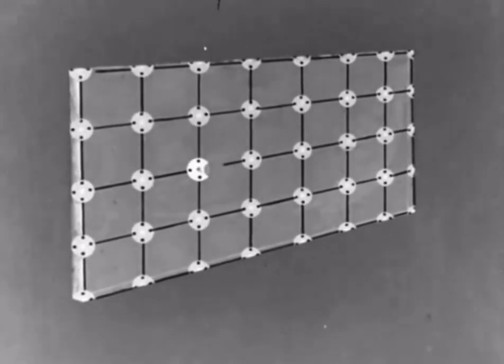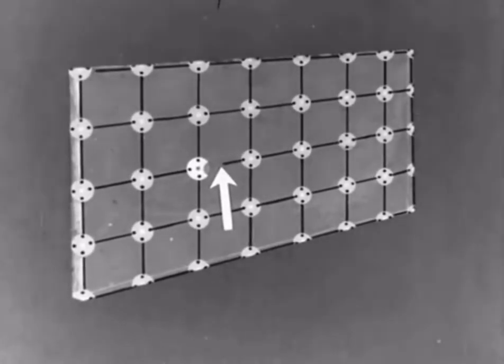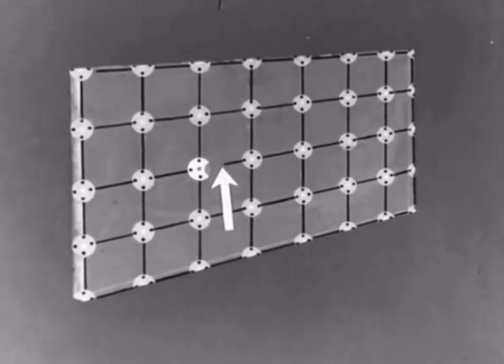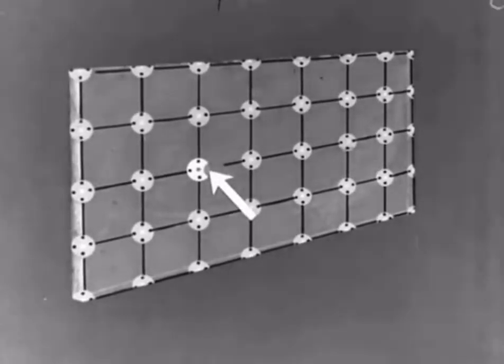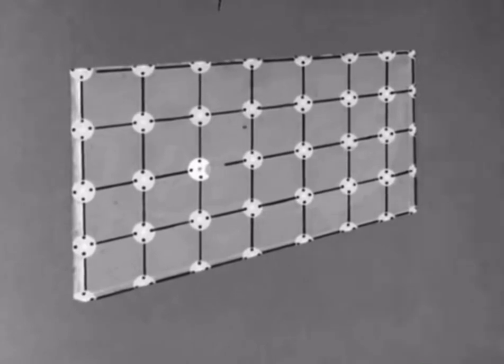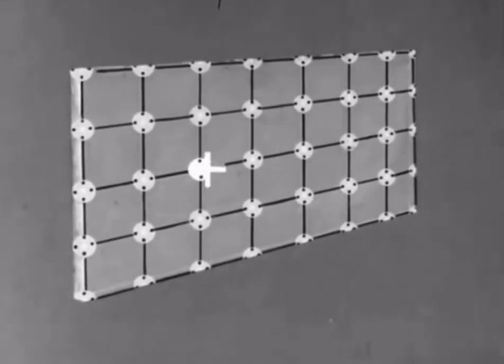When introduced into the germanium crystal, the three electrons form bonds with three adjacent germanium atoms, leaving a fourth bond incomplete. There will be a space left where we are short of an electron. This space behaves as though there were a localised positive charge, ready to capture an electron, and for this reason, the region is termed a positive hole.